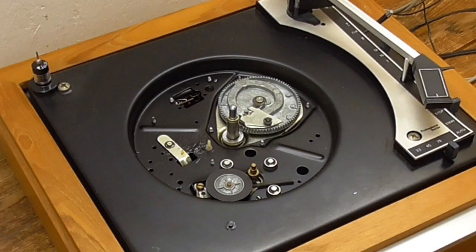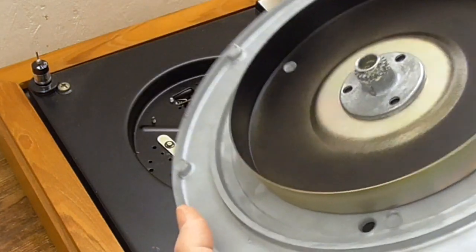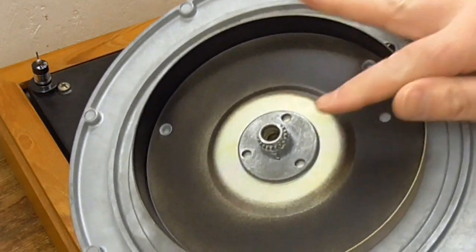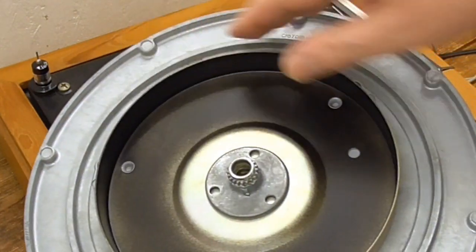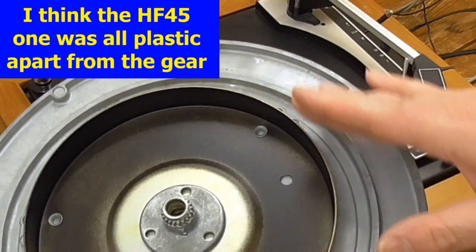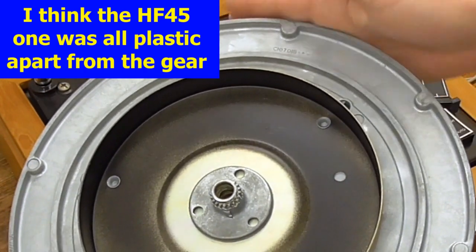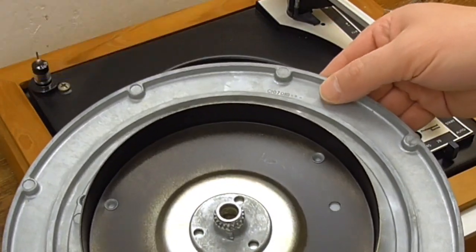Now, unlike the other one, this actually has a nice heavy metal platter. It's basically the same design. It's got the cog in the middle. And it's got this sort of metal pan thing in here, which the idler wheel runs on. And then it's just got this heavy base, heavy cast base, whereas the other one just had a plastic one.